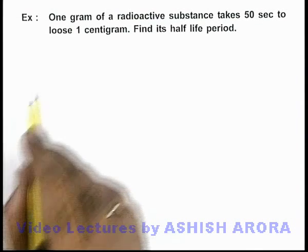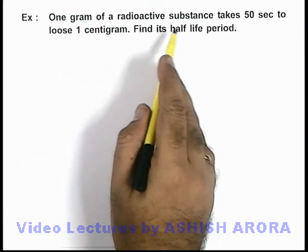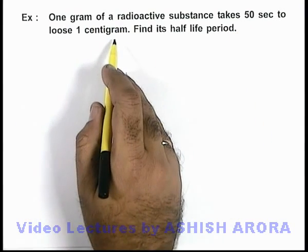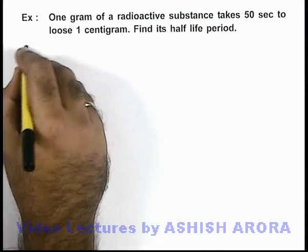In this example, we are given that 1 gram of a radioactive substance takes 50 seconds to lose 1 centigram. We are required to find its half-life time.